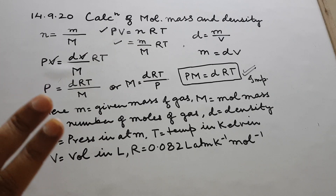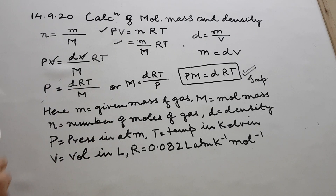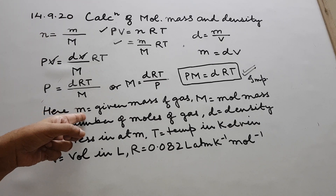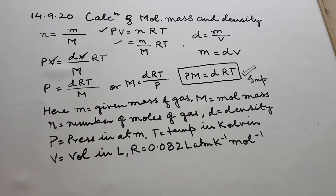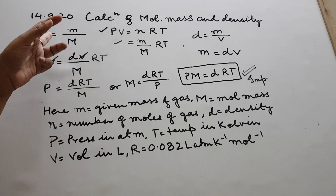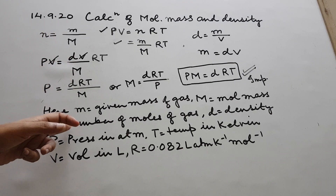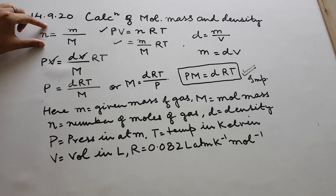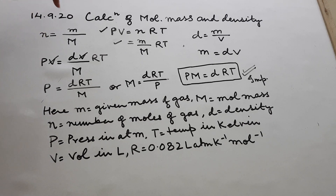PV = nRT is our ideal gas equation. Now, if we have to calculate the number of moles of any substance, it is always the given mass divided by molecular mass. So small n equals given mass of the gas divided by capital M, the molecular mass of the substance. Small n is the number of moles of gas — this is very well known to you all from Class 10 also.